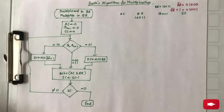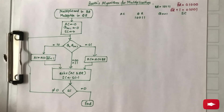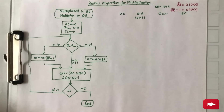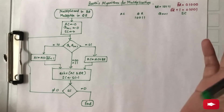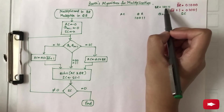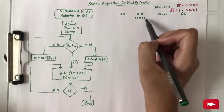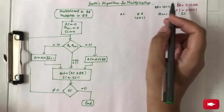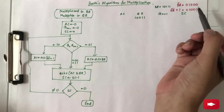The sequence counter is decremented by 1, and as soon as it reaches 0 you stop the procedure. The number of steps needs to be equal to the number of bits in the multiplier. Let's begin with an example. We have two numbers: B_R = 10111 and Q_R = 100111. They need to be multiplied.